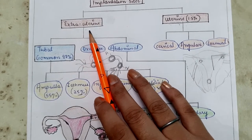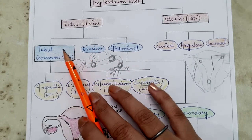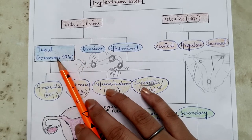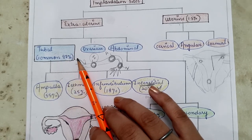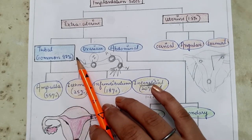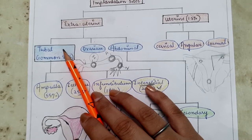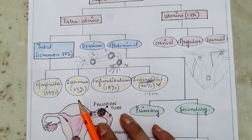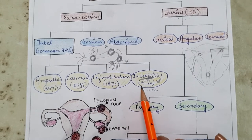Under extra-uterine, the first type is tubal pregnancy, where the fertilized ovum implants inside the fallopian tubes. This is the most common type of ectopic pregnancy, occurring in 97% of cases.